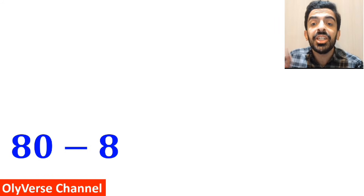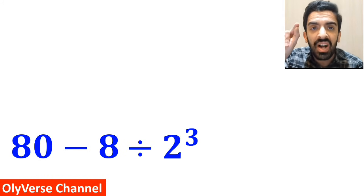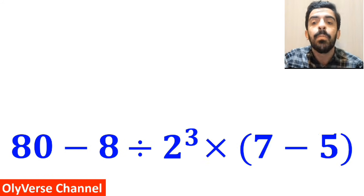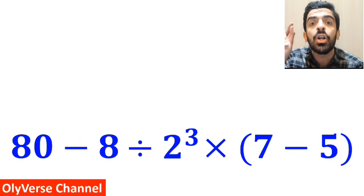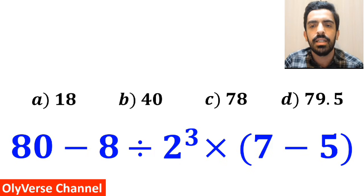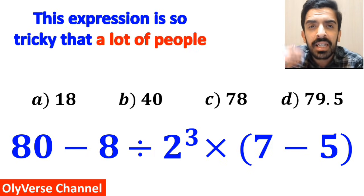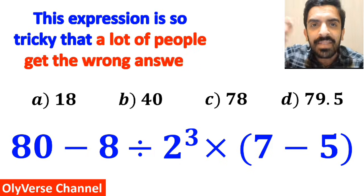What is the value of the expression 80 minus 8 divided by 2 to the power of 3, multiplied by open parenthesis 7 minus 5 close parenthesis? Which option do you think is the correct answer to this question? This expression is so tricky that a lot of people get the wrong answer.